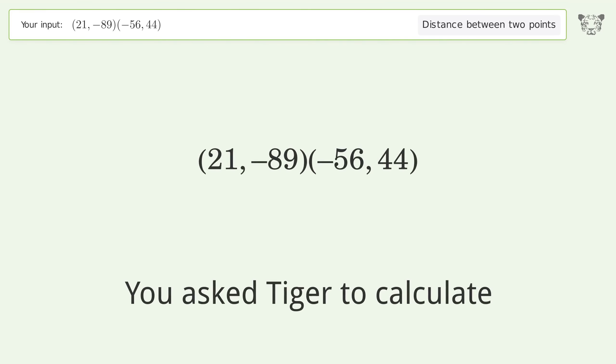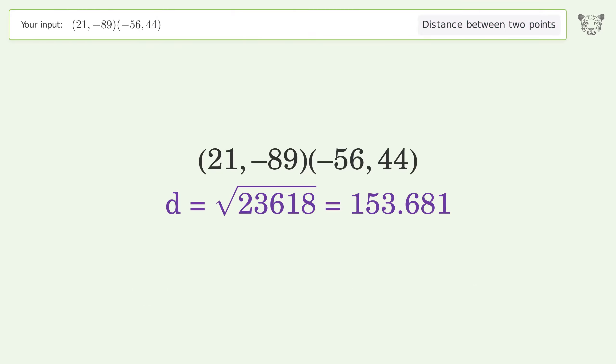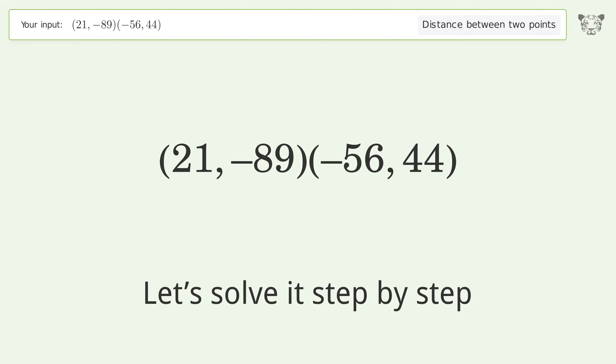You asked Tiger to calculate the distance between two points. The distance between the two points is the square root of 23,618, or 153.681. Let's solve it step by step.